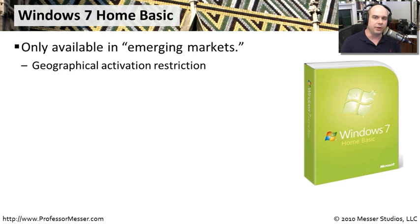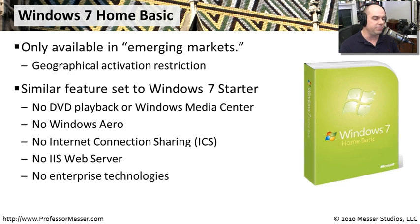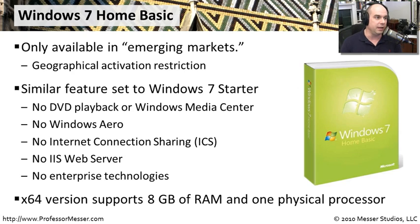One step up from Windows 7 Starter is Windows 7 Home Basic. If you've never seen this version, that's probably because you don't live in an area that is an emerging market for Windows 7. In already established markets like the United States, you'll never see this sold — you won't even be able to activate it. This version is very similar in feature set to Starter: no DVD playback, no Windows Aero, and none of the enterprise functions. However, there is a 64-bit version, it supports up to 8GB of RAM, and it supports one physical CPU.